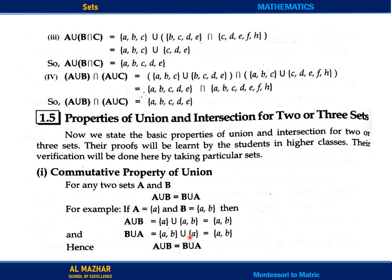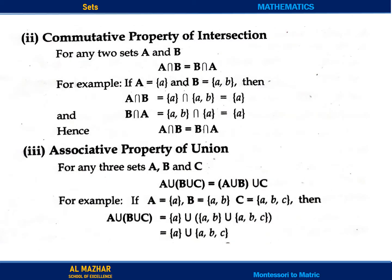This property is called the commutative property. After this is the commutative property of intersection. Now we will see the property of intersection. In this also it holds that A intersection B is equal to B intersection A.